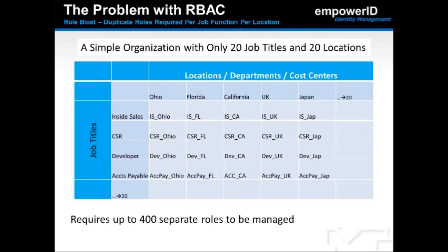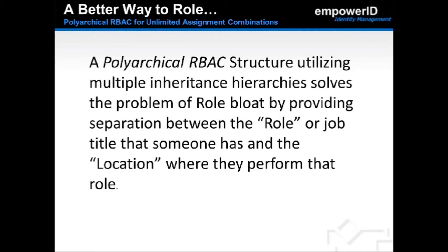For example, a CSR in Ohio would need different access than a CSR in Florida, so the administrator would be forced to create two separate roles. Likewise, a developer in California and a developer in the UK would also need separate roles — and this can quickly become overwhelming from both a management and end-user perspective. At EmpowerID, we have developed a better way to role. Using a polyarchical RBAC structure with multiple inheritance hierarchies, we solved role bloat by separating the role or job title from the location where that role is performed.